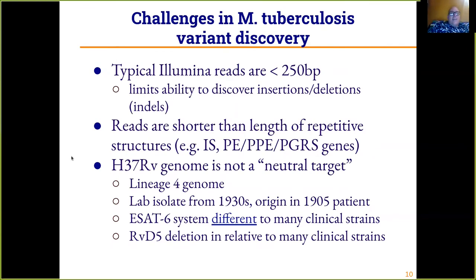There are some challenges in variant discovery in Mycobacterium tuberculosis. A typical Illumina read is less than 250 base pairs, which limits your ability to discover insertions and deletions, especially larger ones, and makes structural rearrangements more difficult to find. The reads are also shorter than repetitive structures like insertion sequences or PE/PPE/PGRS genes, making those regions harder to characterize. The H37Rv genome is also not a neutral target — it's a lineage 4 genome isolated in the 1930s from a 1905 patient.